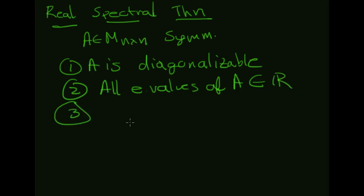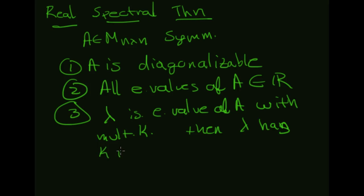So there are no complex eigenvalues. And three, if lambda is an eigenvalue of A with multiplicity k, then lambda has k linearly independent eigenvectors.